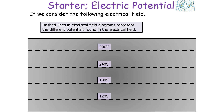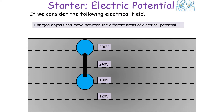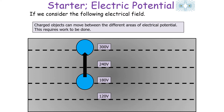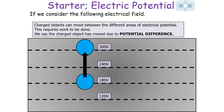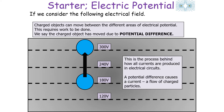Consider the following electrical field. The dashed lines in the electrical field line diagrams represent the different potentials found in the electrical field, so charged objects can move between different areas of electrical potential. When this takes place we say the charged object has moved due to a difference in potential, or more commonly a potential difference. This is the process behind how all currents are produced in electrical circuits — a potential difference causes a current flow, a movement of charged particles.